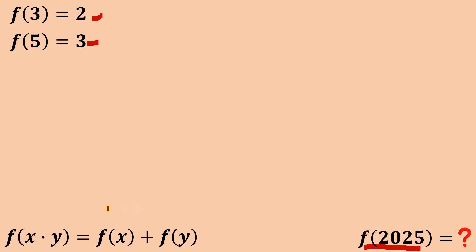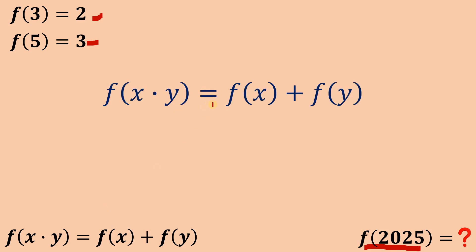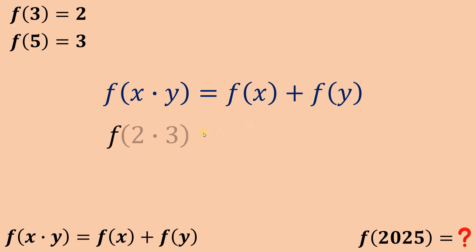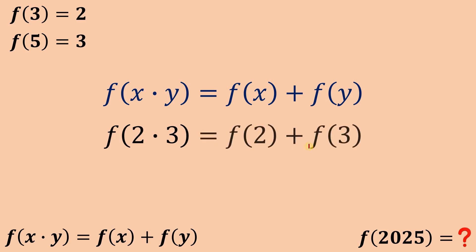Now, what does this function mean — f(x times y) equals f(x) plus f(y)? For example, if we have f(6), and we know 6 is 3 times 2, then it is equivalent to f(2) plus f(3).